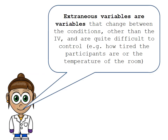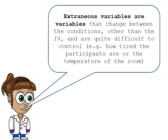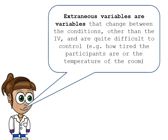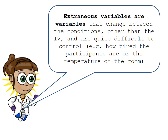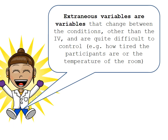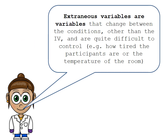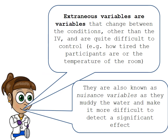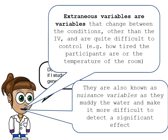Extraneous variables are variables that change between the conditions other than the IV. Between each condition — with or without marijuana — they are variables that could potentially change and could be quite difficult to control, such as how tired the participants are or the temperature of the room. They're also known as nuisance variables because they muddy the water and make it more difficult to detect a significant effect and to establish whether it truly was the IV that caused the results.